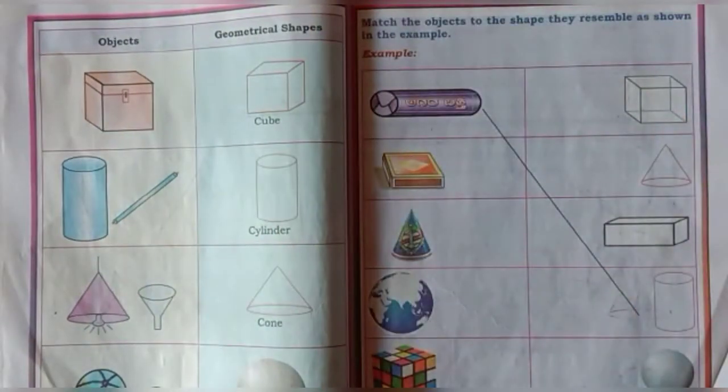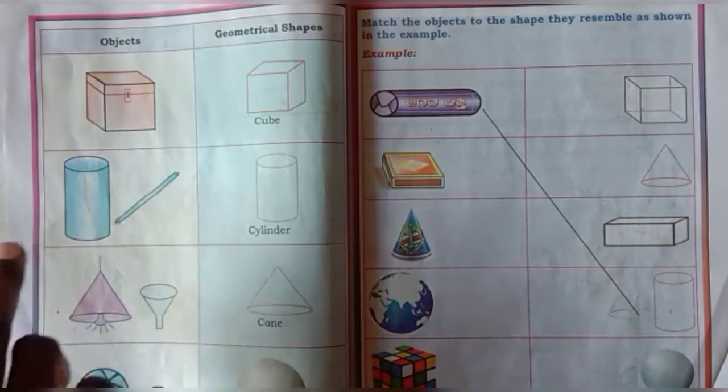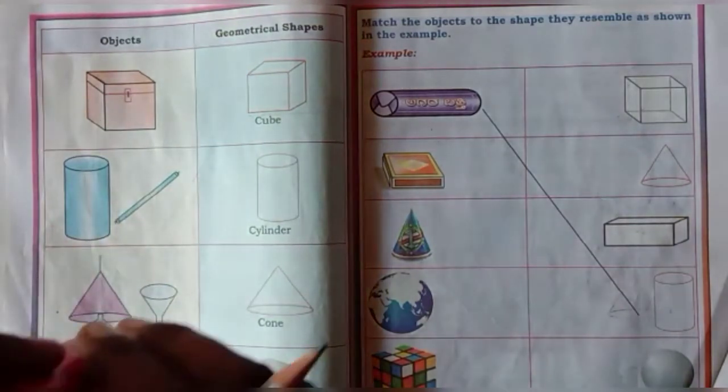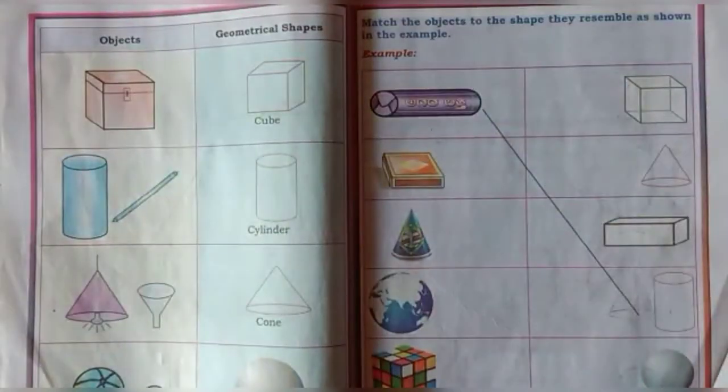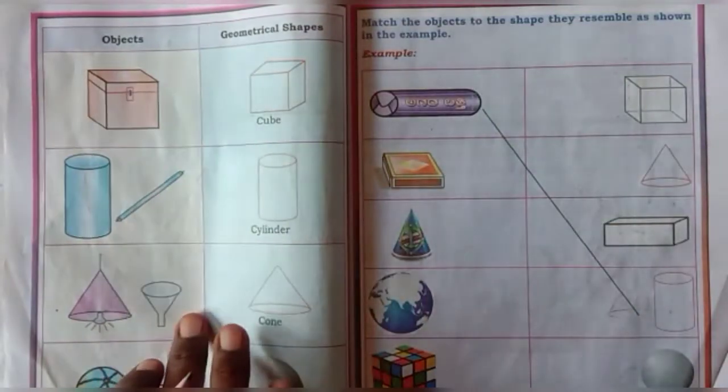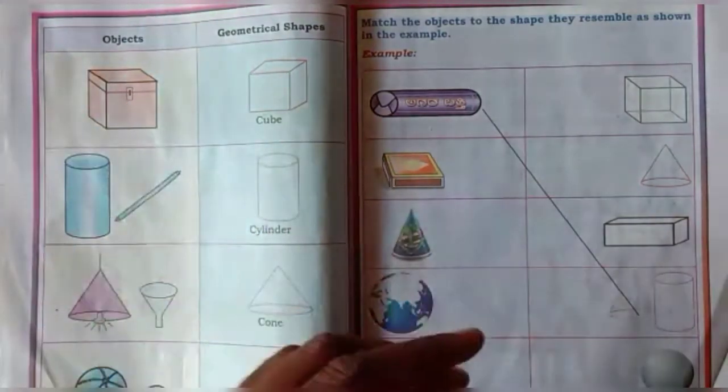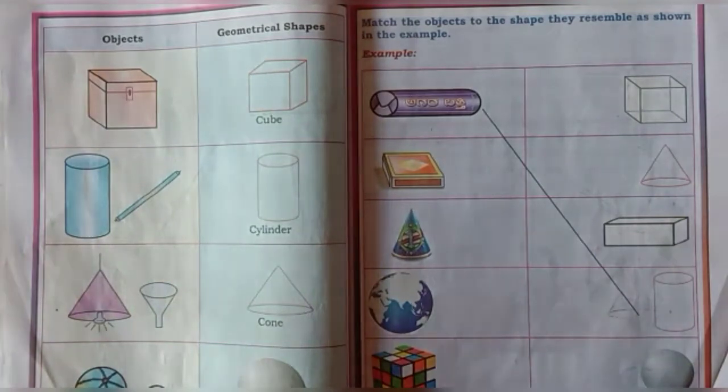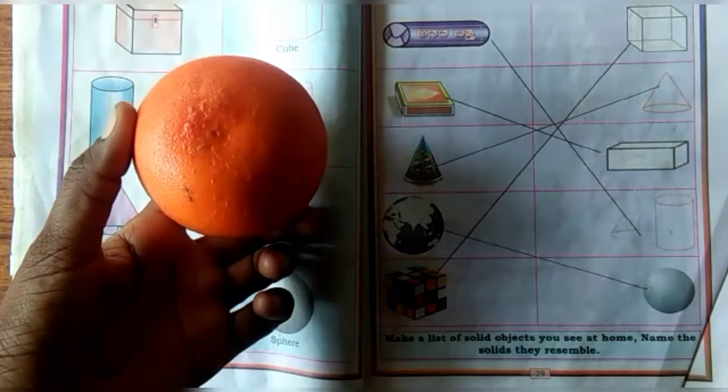Next, this object is cylinder. Next, this object is cone. Next, this object is sphere.